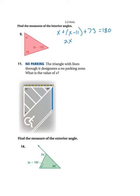So let's see, negative 11 plus 73 would be 62. So 2x plus 62 equals 180. These are our three angles of the triangle added up to 180.